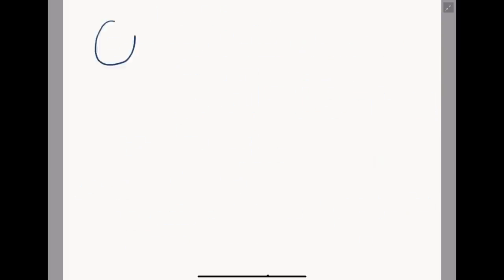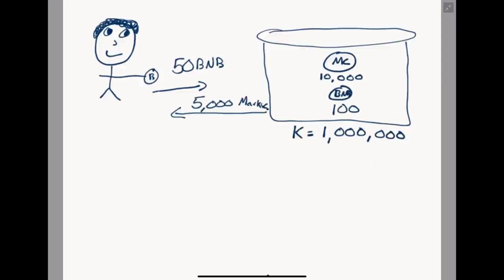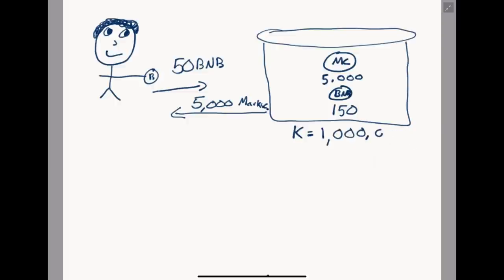K cannot change, and this may not seem important but let's walk through an example. Bob wishes to spend 50 BNB on PancakeSwap to receive 5,000 of my 10,000 Mark's Coin, hoping to become our largest whale and own half of the supply right off the bat. If Bob's transaction goes through as he wishes, PancakeSwap would deposit his 50 BNB and withdraw 5,000 Mark's Coin from the liquidity pool, leaving the pool with 5,000 Mark's Coin and 150 BNB. Multiplying these values together gives 750,000 — which is incorrect since K must stay constant at 1 million. So we update the BNB from 100 to 150 and solve.